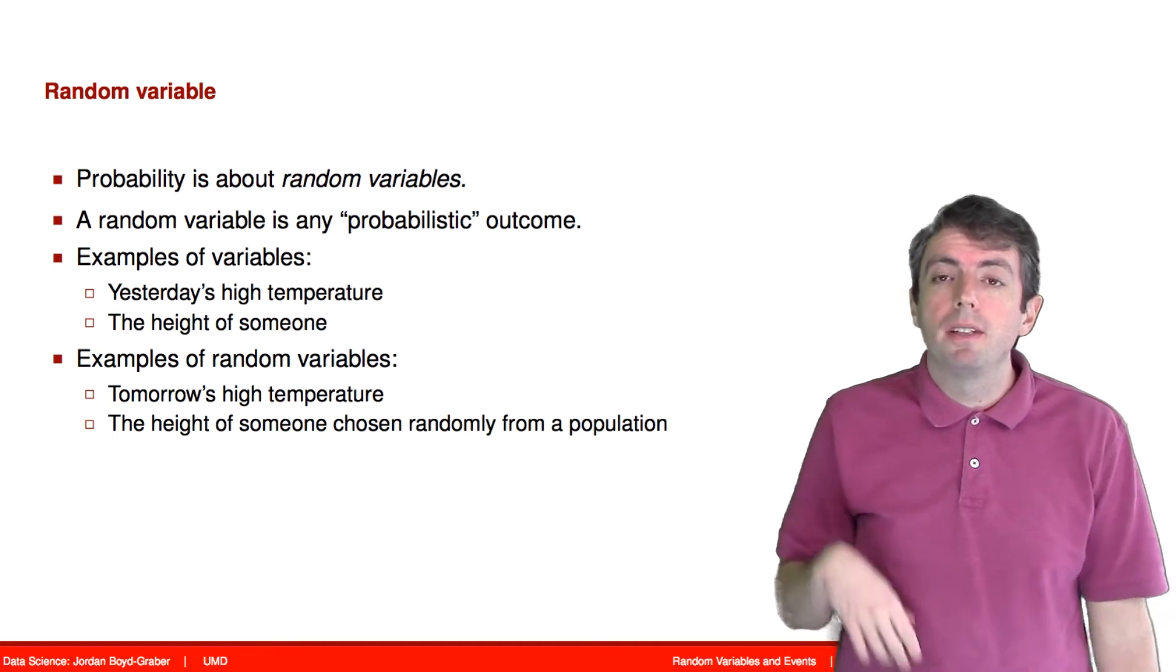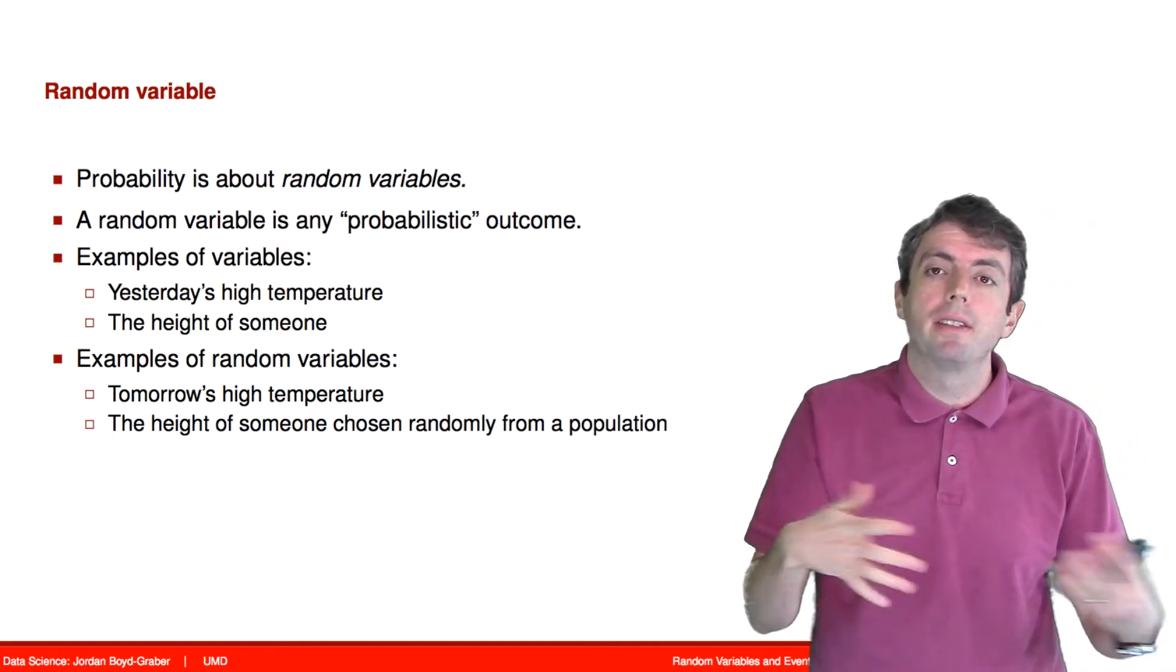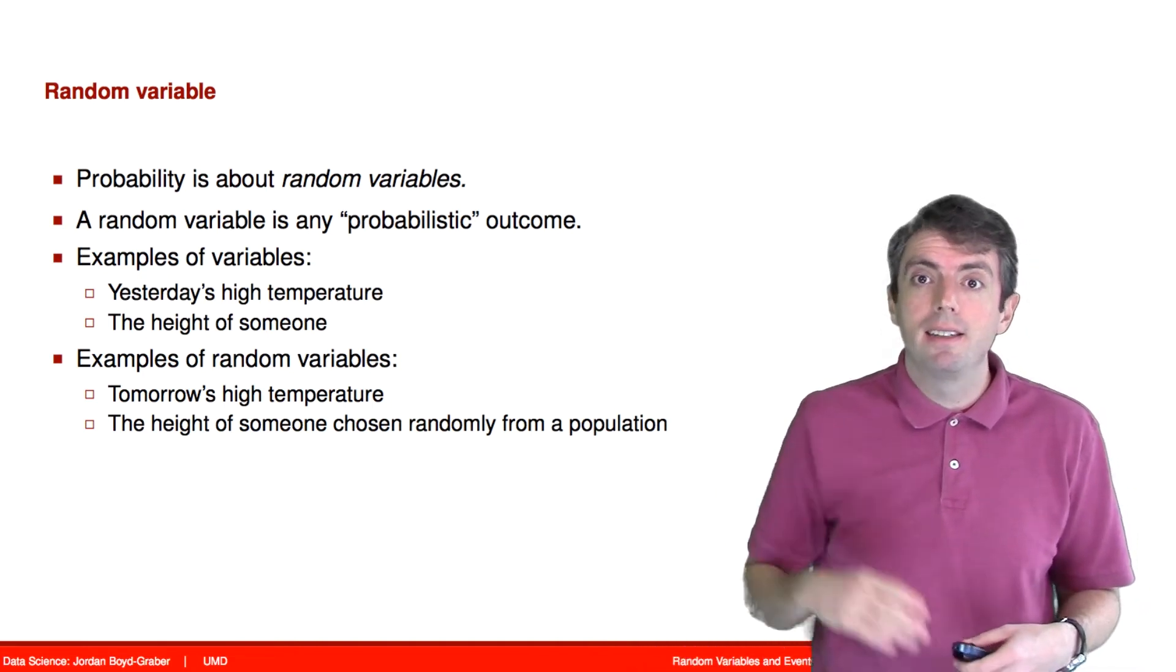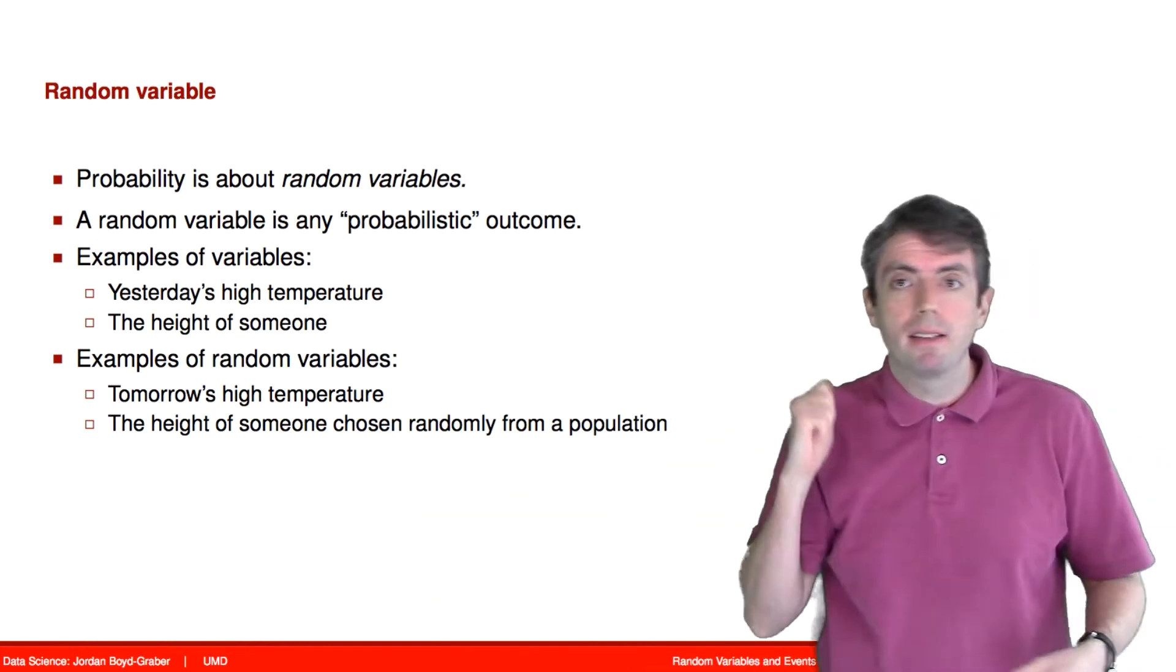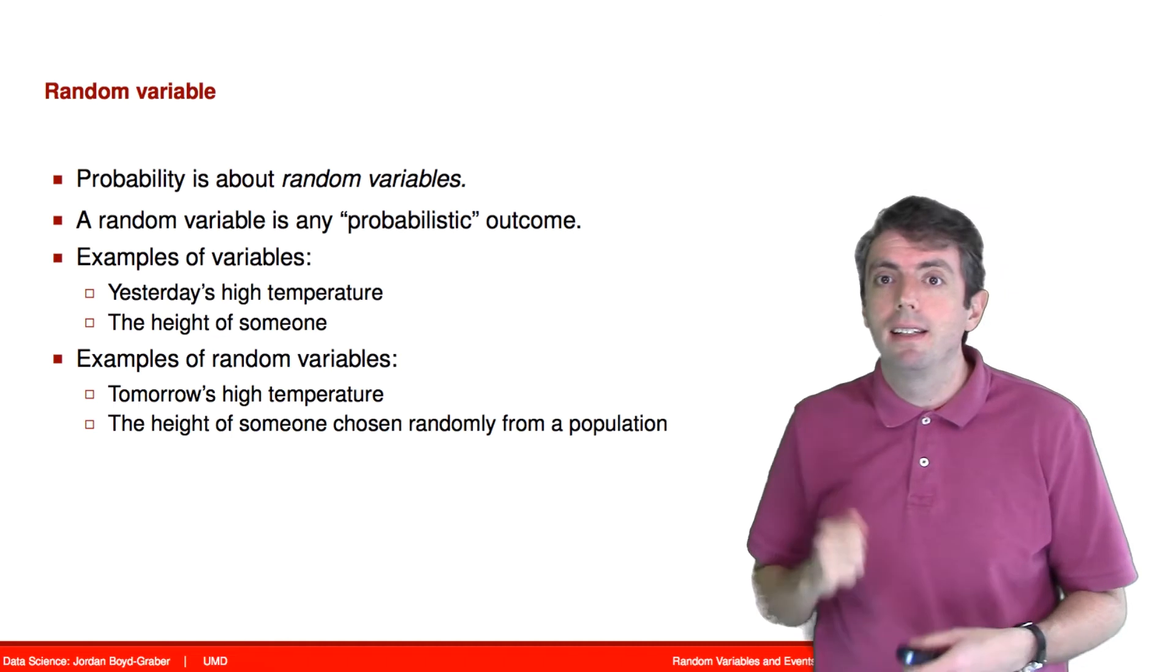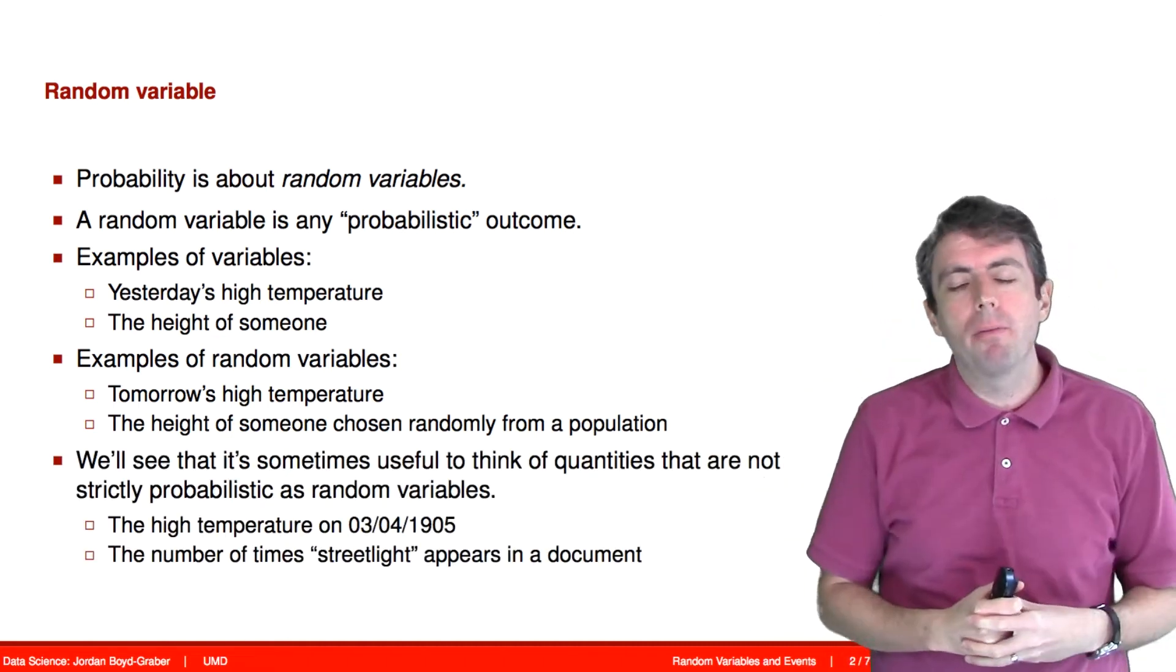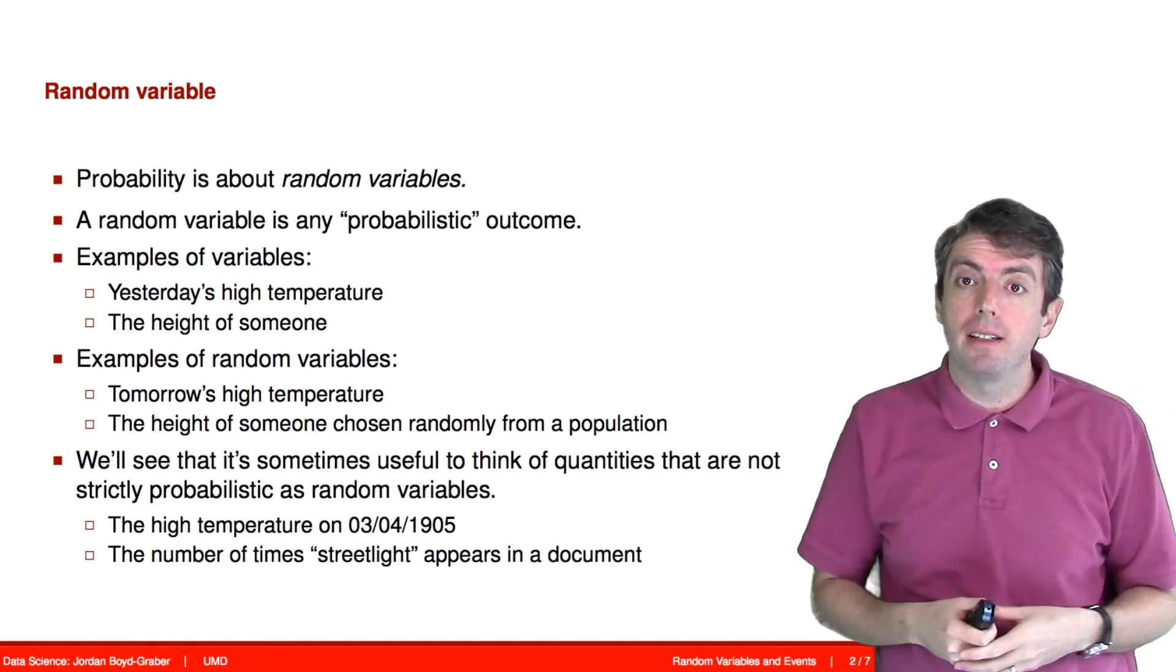So for example, tomorrow's temperature is a random event. The weather is some probabilistic process, and the temperature we experience on a given day is a random variable. If you have a bunch of people and you randomly pick someone out of that, that is a random variable. And sometimes we even stretch what we think of as a random variable because it's useful from a modeling perspective.